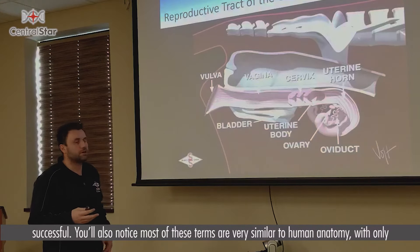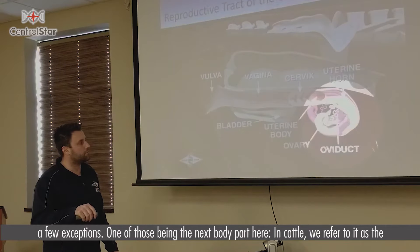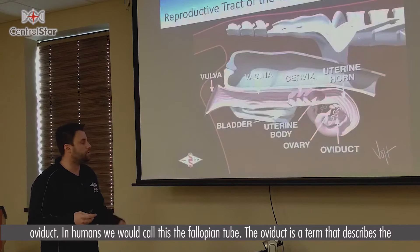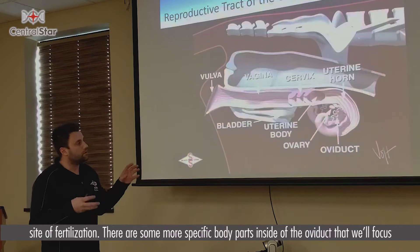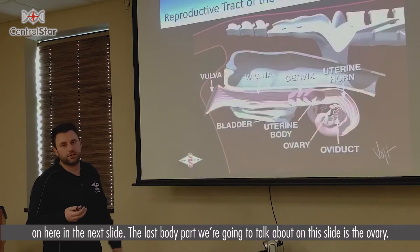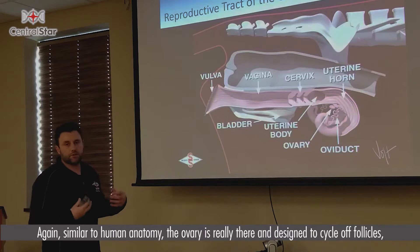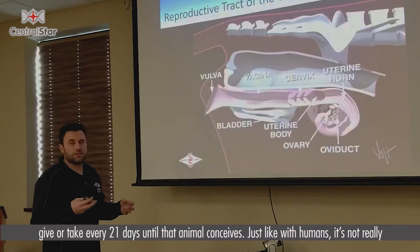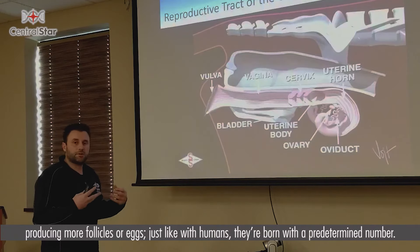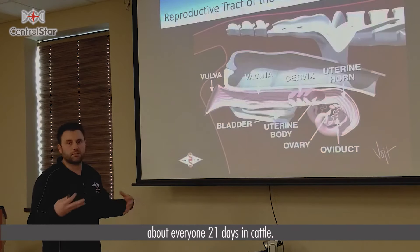You'll also notice most of these terms are very similar to human anatomy with only a few exceptions. One of those is the next body part — in cattle we refer to it as the oviduct, whereas in humans we would call this the fallopian tube. The oviduct is the general area that describes the site of fertilization, with more specific body parts inside that we'll focus on in the next slide. The last body part on this slide is the ovary, which is designed to cycle off follicles give or take every 21 days until the animal conceives. Just like with humans, they're born with a predetermined number of follicles, so it's really there just to release and cycle those off until conception — again about every 21 days in cattle.